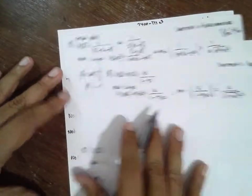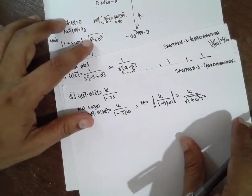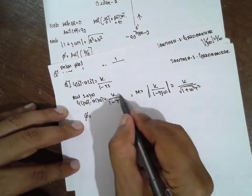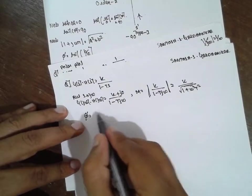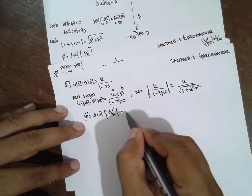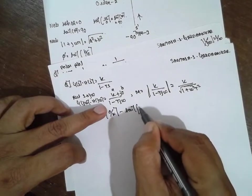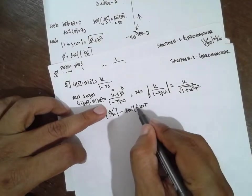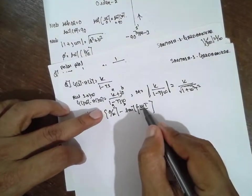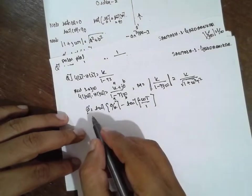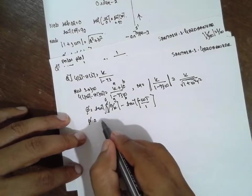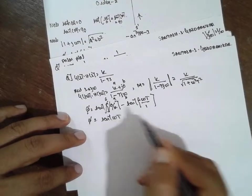Now for phase: φ. For the numerator, j is 0, so tan inverse(b/a) where b is 0, divided by K, gives 0. Minus for the denominator: tan inverse of ωT divided by minus 1. Since minus sign appears at the bottom, you apply the special rule. φ equals 0 minus 180 plus tan inverse(ωT), simplifying to phi angle involving ωT.